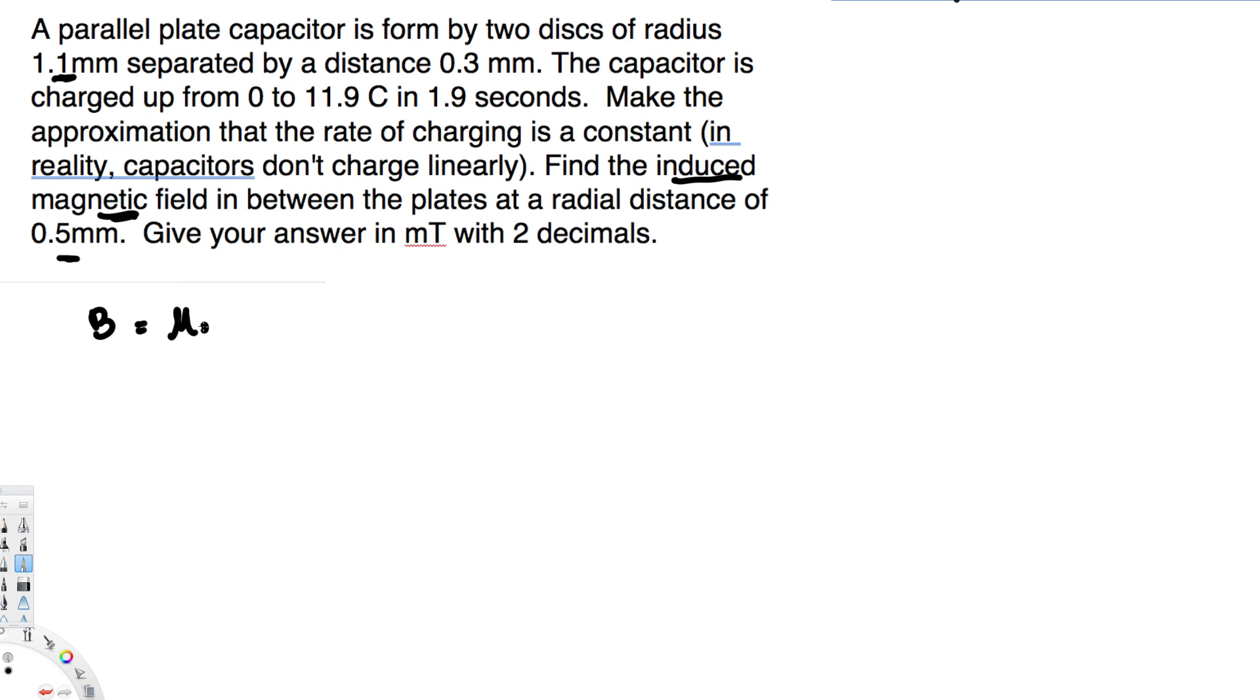B is equal to mu naught a times i of t divided by 2 pi r square. Here this a value is the radial distance that is 0.5 millimeter, and we have the r value that is this radius that is 1.1 millimeter.